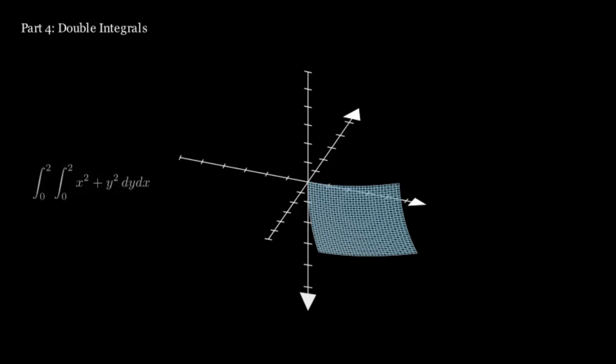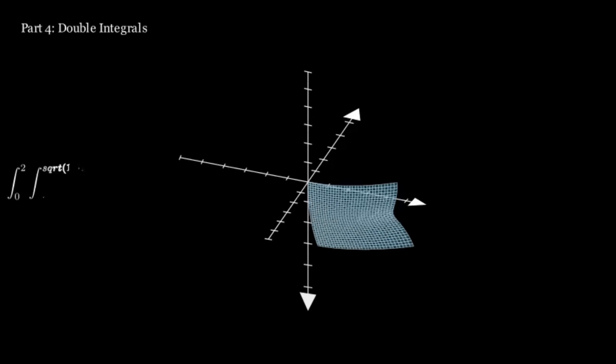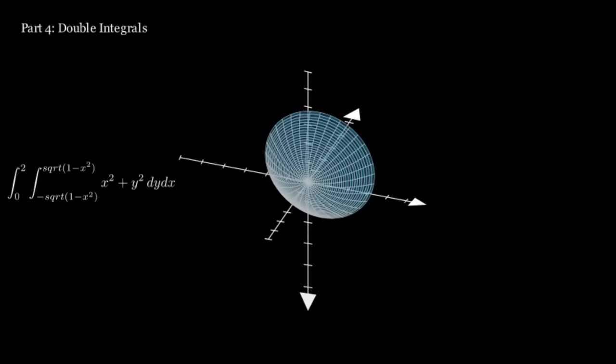But that isn't all we can do with double integrals. You can also integrate over a non-rectangular region. Instead of having the bounds of the integrals be numbers, they can be functions. We can also use polar coordinates for double integrals, where instead of making an integral dy dx, it is dr d theta. Notice that the polar equation we're integrating is r cubed instead of r squared. More on that later.